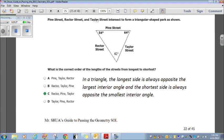Pine Street, Rector Street, and Taylor Street intersect to form a triangular-shaped park as shown. Okay. Pine, Rector, Taylor. Okay. What is the correct order of the lengths of the streets from longest to shortest? Now, if you remember from triangle inequalities, in a triangle, the longest side is always opposite the largest interior angle. And the shortest side is always opposite the smallest interior angle.